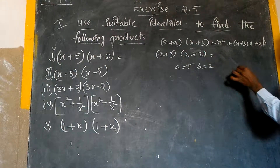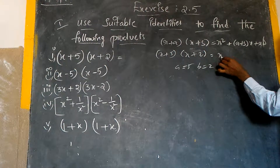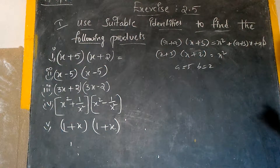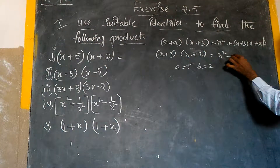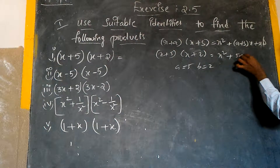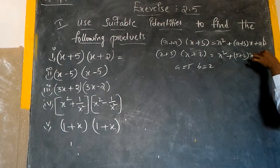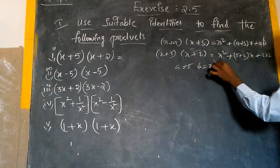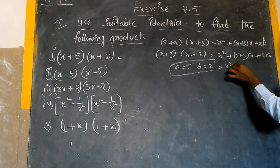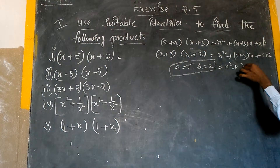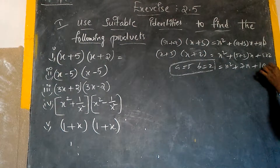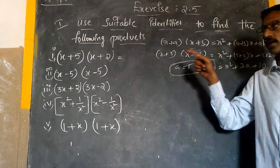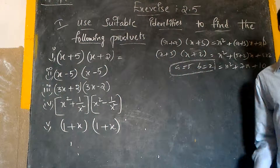So this equals — we can write: in place of x we have x directly, so we get x² directly. Plus (a + b) means 5 plus 2 into x. And a into b means 5 into 2. So this is nothing but x² + 7x + 10. Using a suitable identity, we find the product of (x+5)(x+2). Is it clear? Yes.